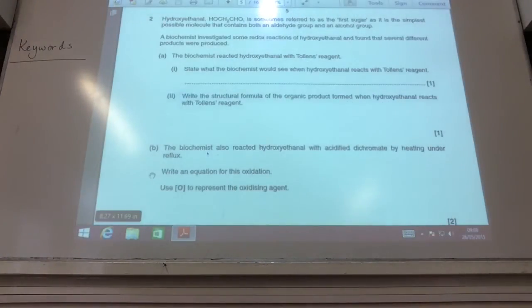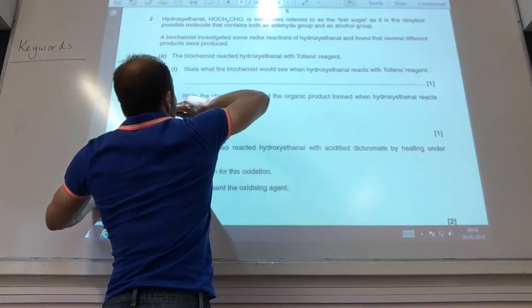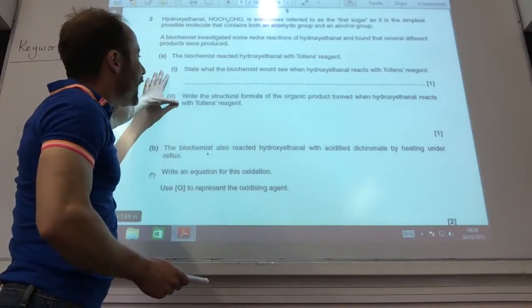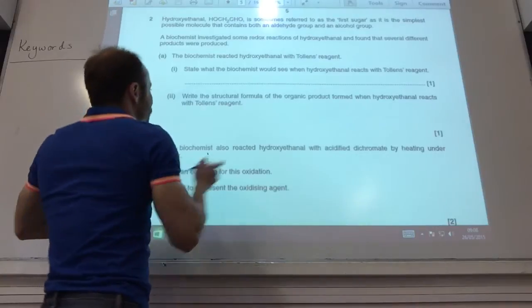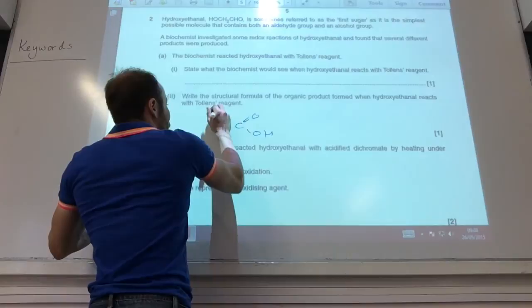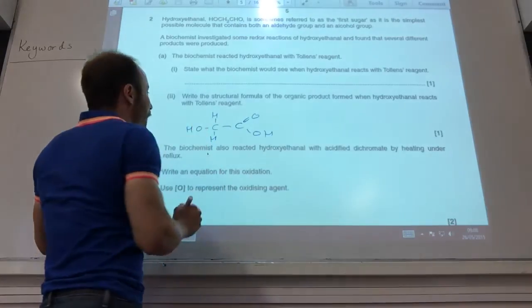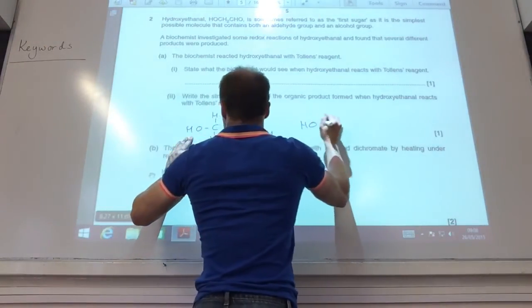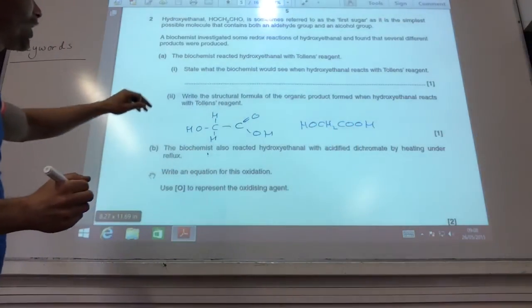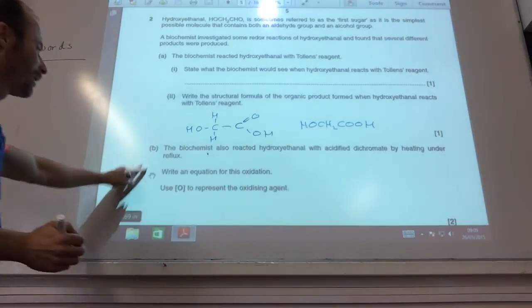Alright, so another question on hydroxyethanal. Notice it's got a primary alcohol there and an aldehyde group there. What would I see with Tollens' reagent? I'd obviously see a silver mirror because I've got an aldehyde group. Write the structural formula. If I do the full one, first of all, that's going to be CH2OH, COOH like so. When hydroxyethanal reacts with Tollens' reagent, the alcohol is unchanged, but my aldehyde becomes a carboxylic acid.